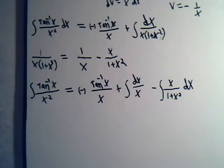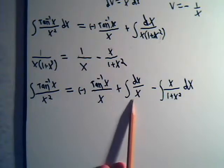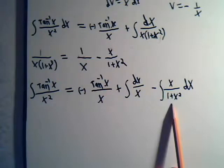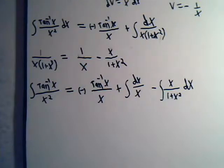And it looks like this is going to fall right apart for us. This is obviously going to be a natural log of x. And here if we call u 1 plus x squared, du would be 2x dx. That would be 1 half du.